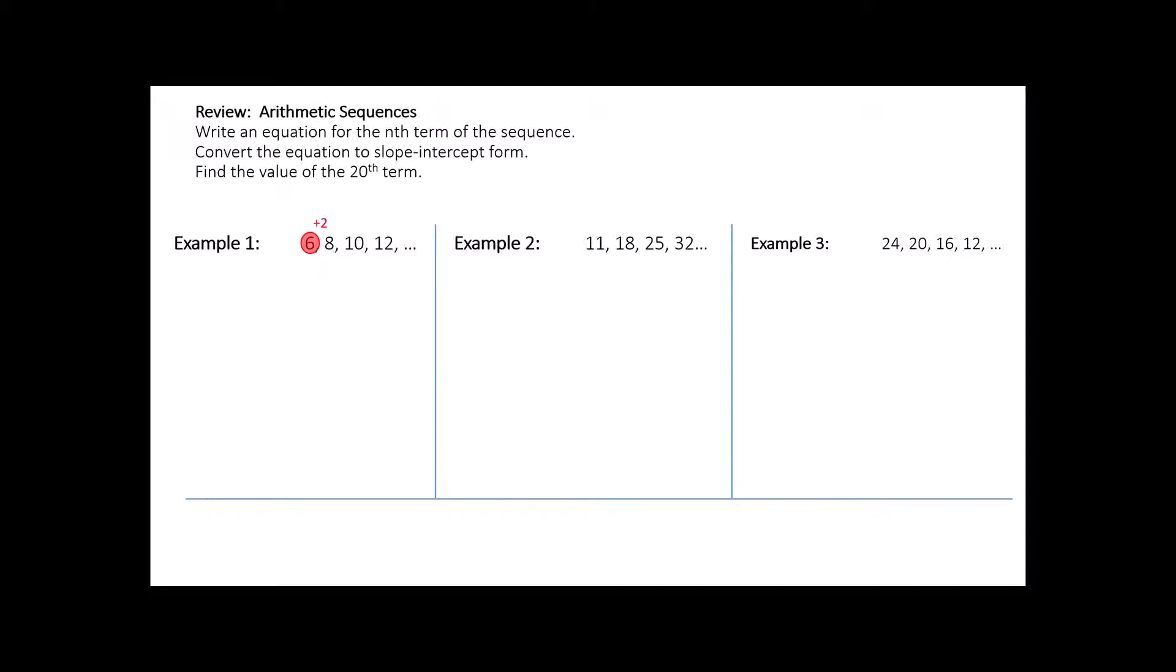Hopefully you can look at that and recognize that what's happening is we are gaining 2 every single time. So if I were to describe this pattern in words, I would say that the first term is the 6, and there is a constant difference, or a constant rate of change, of plus 2 every single time. When we discussed arithmetic sequences the first time around, I gave you a pattern for that. We said, to find the value of the number in any position, that's always going to be equal to our initial or first number in the sequence, plus whatever that common difference is added over and over n minus 1 times.